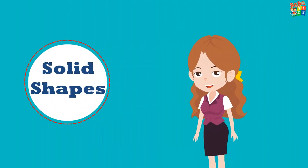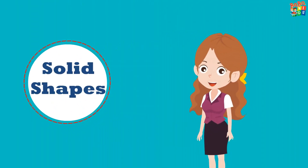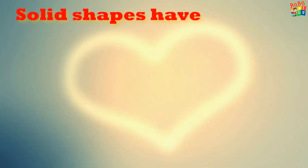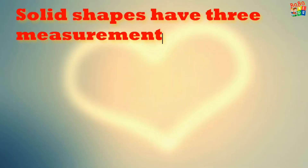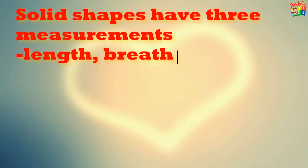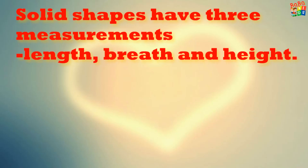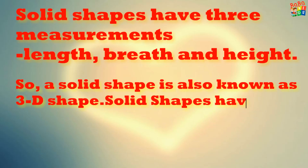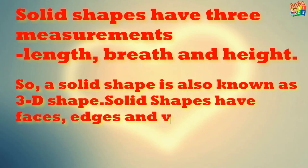Hello kids! Today we will learn about Solid Shapes. Solid Shapes have three measurements: length, breadth, and height. So a solid shape is known as a 3D shape. Solid Shapes have faces, edges, and vertices.